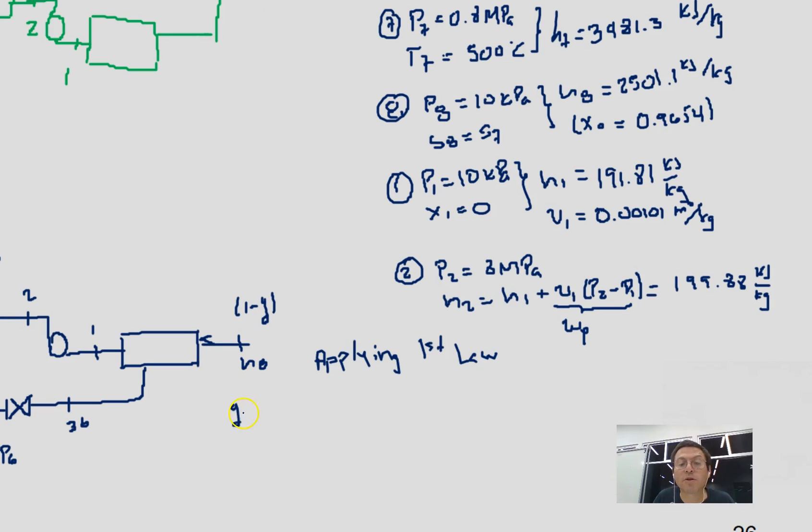We have y, which is the fraction that we extract, times h6 that corresponds to this entrance, plus this stream. We already have all the mass flow that gets together in the condenser, so we don't have 1 minus y. We have 1 minus y plus y equals 1, we have the complete flow rate here, so that would be plus h2.